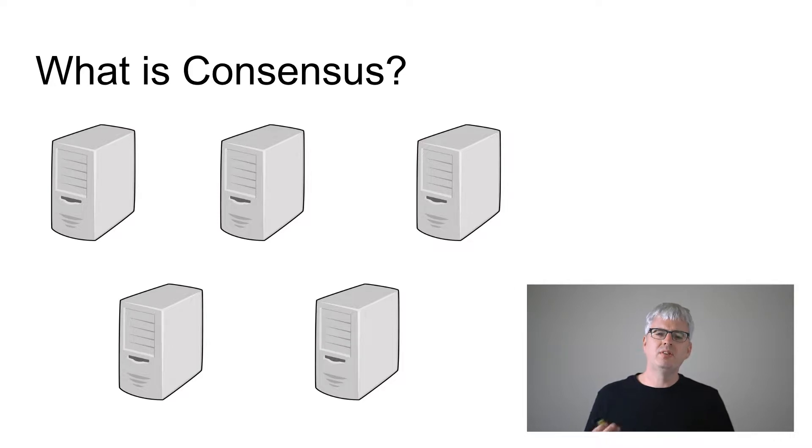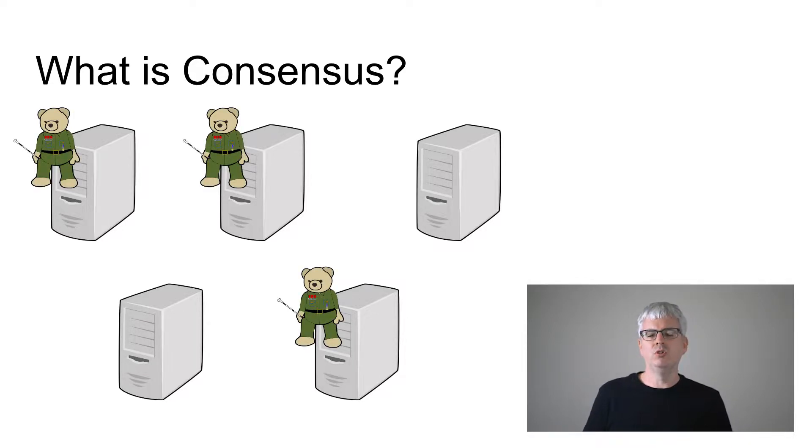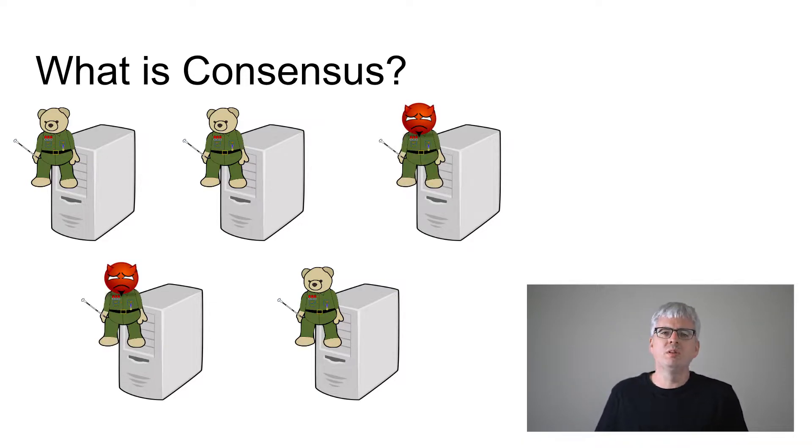A quick review of what consensus is: if we have a bunch of computers, we can divide those computers into good computers and bad computers. Our good computers are doing what we expect and running our consensus algorithm. Our bad computers are doing arbitrarily bad things and we shouldn't care what they do. If our consensus algorithm works, they aren't going to mess us up. And a consensus is formed when all of the good computers agree upon and use a single blockchain.